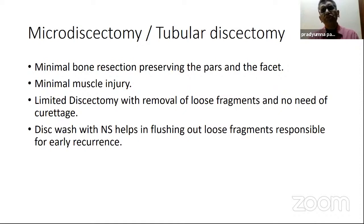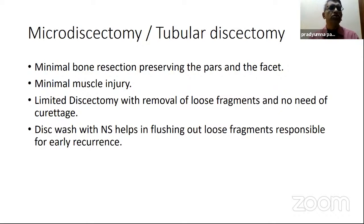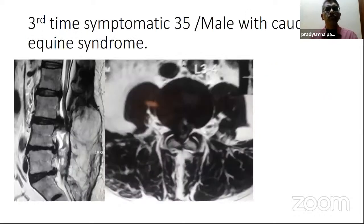In case of a large disc herniation, some important points: do minimal bone resection as much as essential, preserving the pars and facet. With a large disc herniation, you want to go lateral so you tend to remove more bone, but the more bone you remove, the more chances that if the patient requires a second surgery, you may have to convert to fusion because there is less bone preserved. Do minimal muscle injury, and there is no role for radical discectomy or curettage of the disc — limited discectomy with removal of loose fragments is enough.